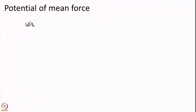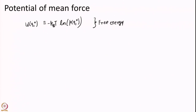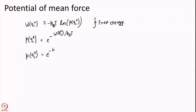There is a very clever way of removing this trouble, and it is a very common trick. We define a function W(q₁⁰) = −kT ln[P(q₁⁰)]. For those familiar with statistical mechanics, this is the definition of free energy. This gives P(q₁⁰) = e^(−W(q₁⁰)/kT), and therefore P(q₁†) = e^(−W(q₁†)/kT).